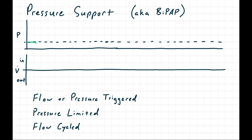Starting at end expiration with circuit pressure at PEEP, the patient initiates a breath — pressure decreases a little, flow increases a little. The ventilator recognizes this inspiratory effort, triggering inspiration. Circuit pressure increases to the preset inspiratory pressure, creating an initial increase in inspiratory flow which decreases as pulmonary pressure increases. In a patient who isn't paralyzed, they have some volitional control — they can lower their diaphragm and expand the ribcage to keep pulmonary pressure lower, or use respiratory musculature to increase it. So as circuit pressure stays constant at the set inspiratory pressure, flow will vary depending on what the patient is doing.